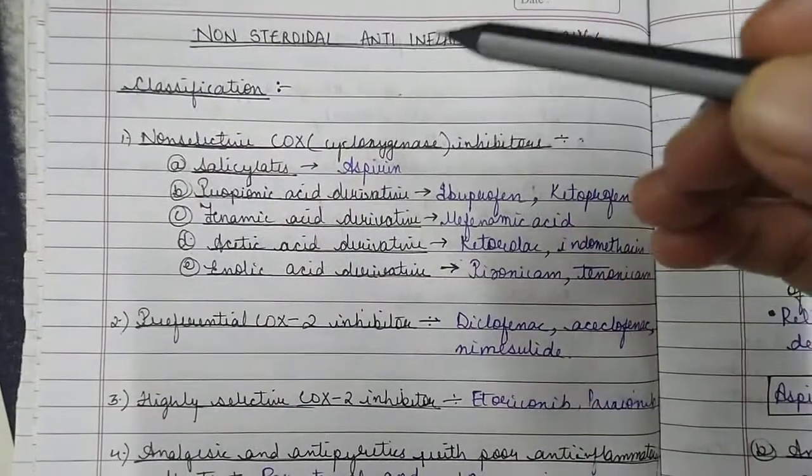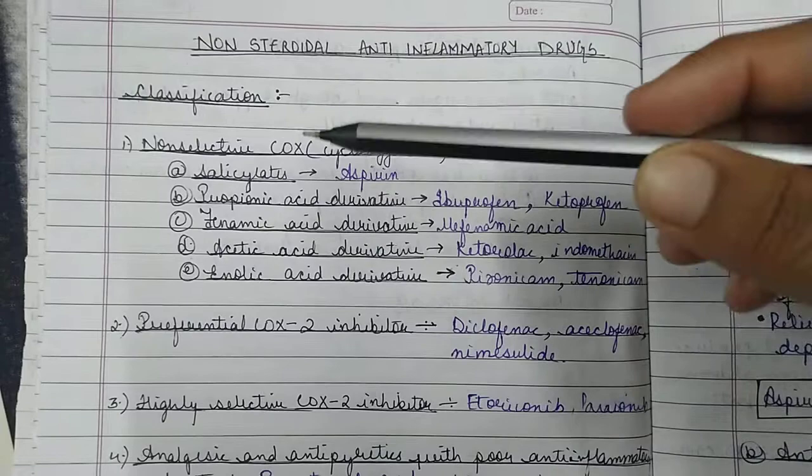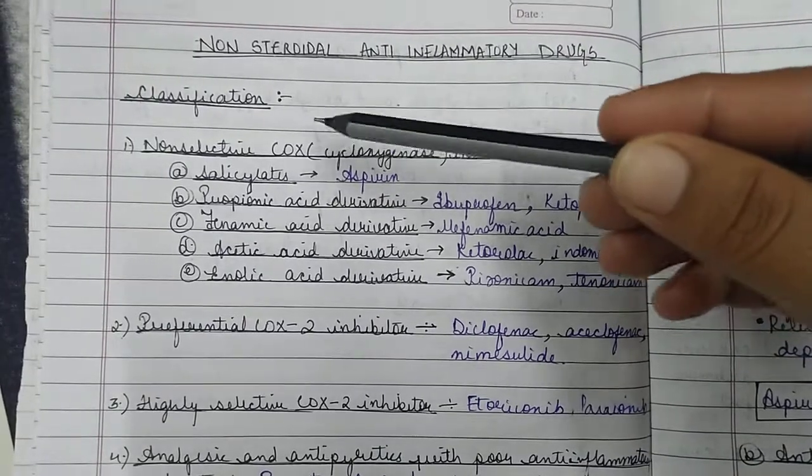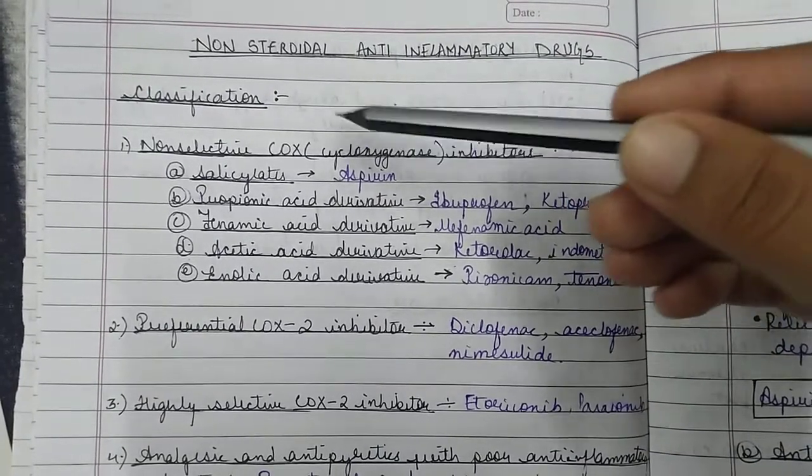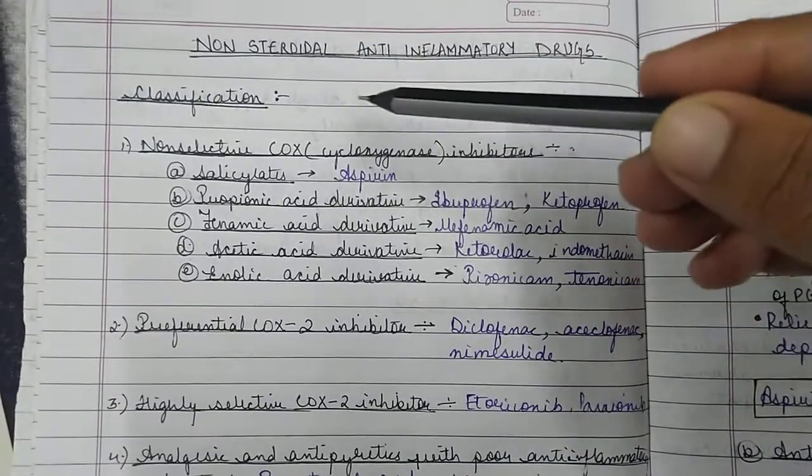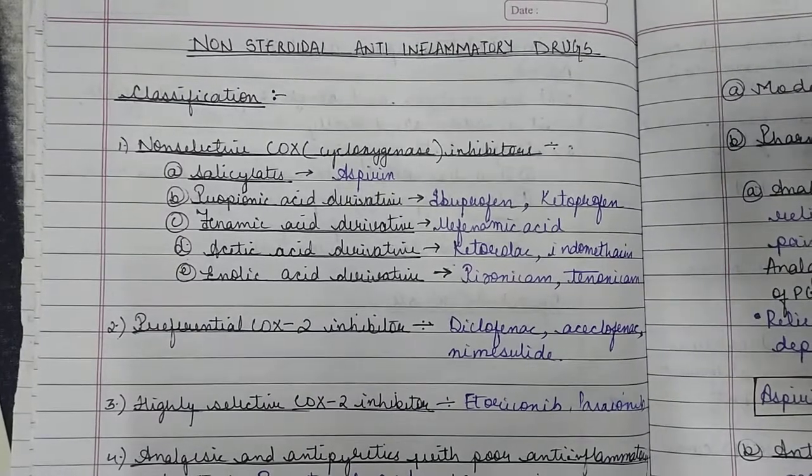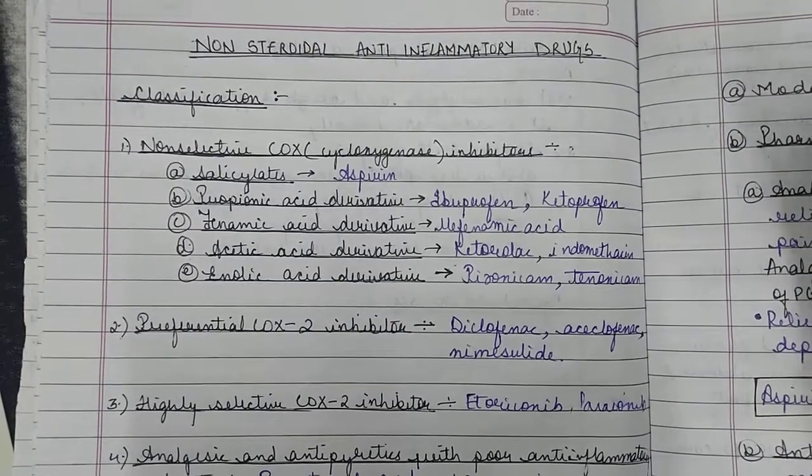Firstly, we are going to talk about the classification. NSAIDs are classified on the basis of their inhibition to the COX enzyme. COX is an enzyme that helps to form prostaglandins, and these prostaglandins help in pain mediation.